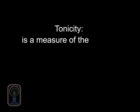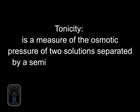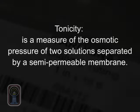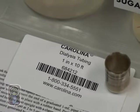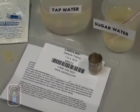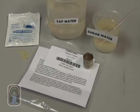Tonicity is the measure of the osmotic pressure of two solutions separated by a semi-permeable membrane. It is commonly used when describing the response of cells immersed in an external solution. Like osmotic pressure, tonicity is influenced only by solutes, such as sugar, that cannot cross the membrane.